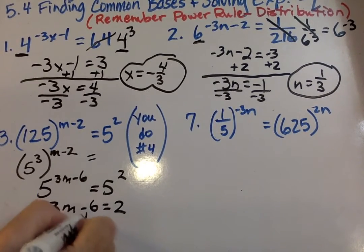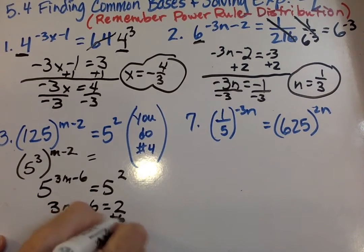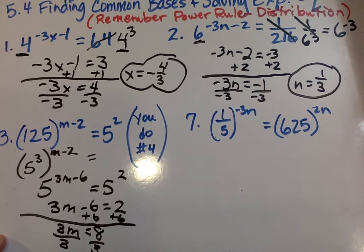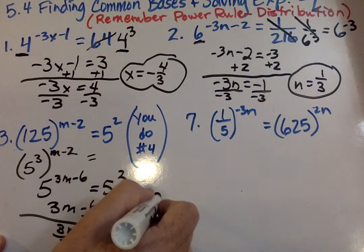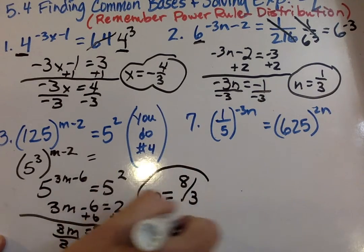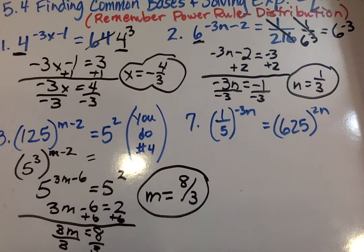Then we say 3m minus 6 equals 2. We add 6. Divide by 3. And m equals 8 thirds. Okay. So let's go on to the next one. So just know that yes, you will be getting some fractions.